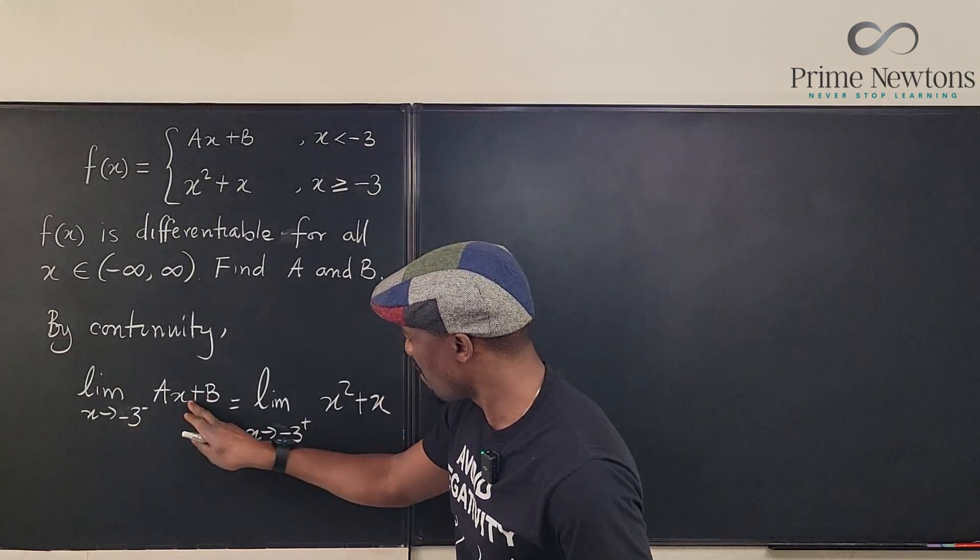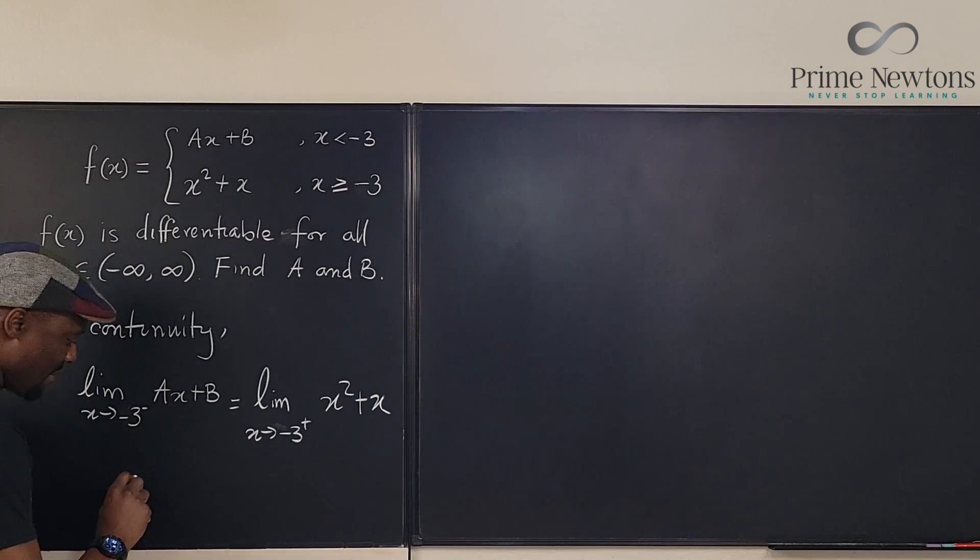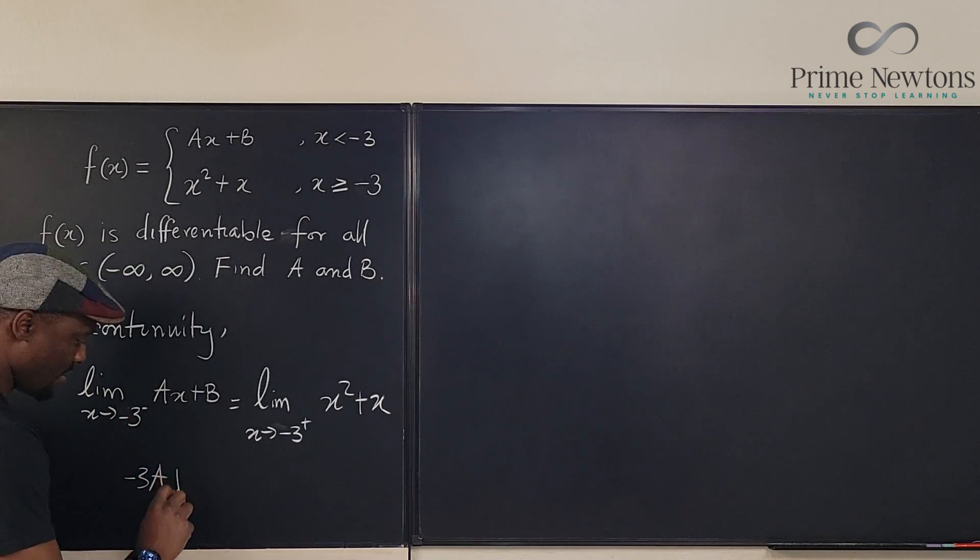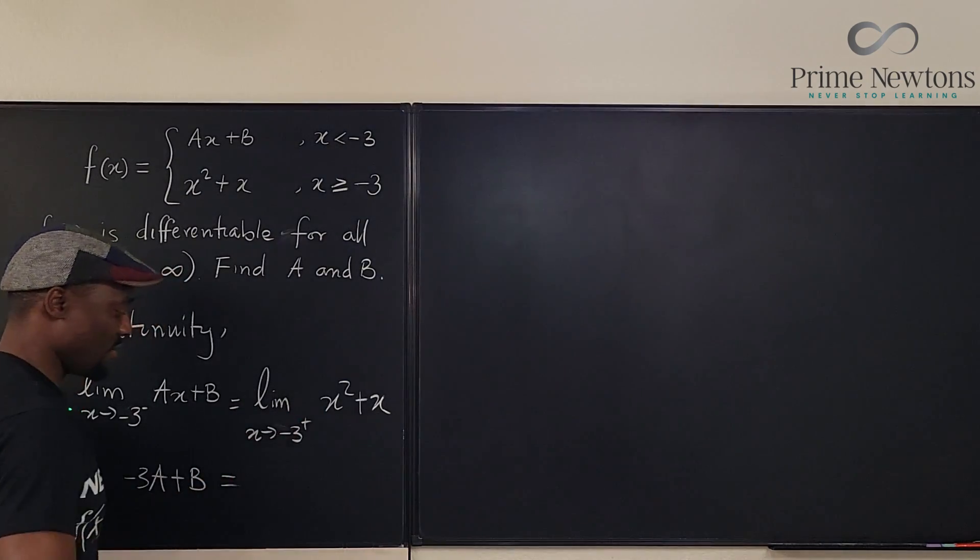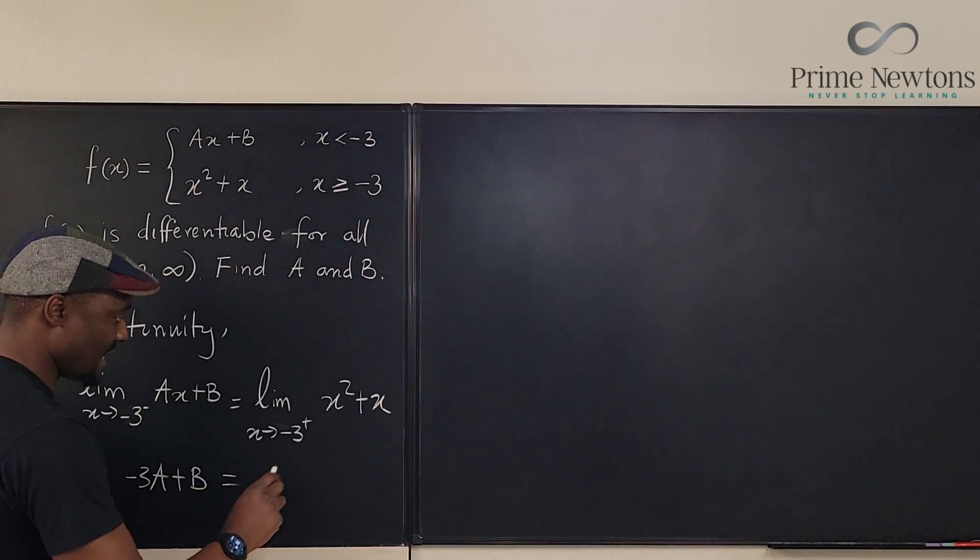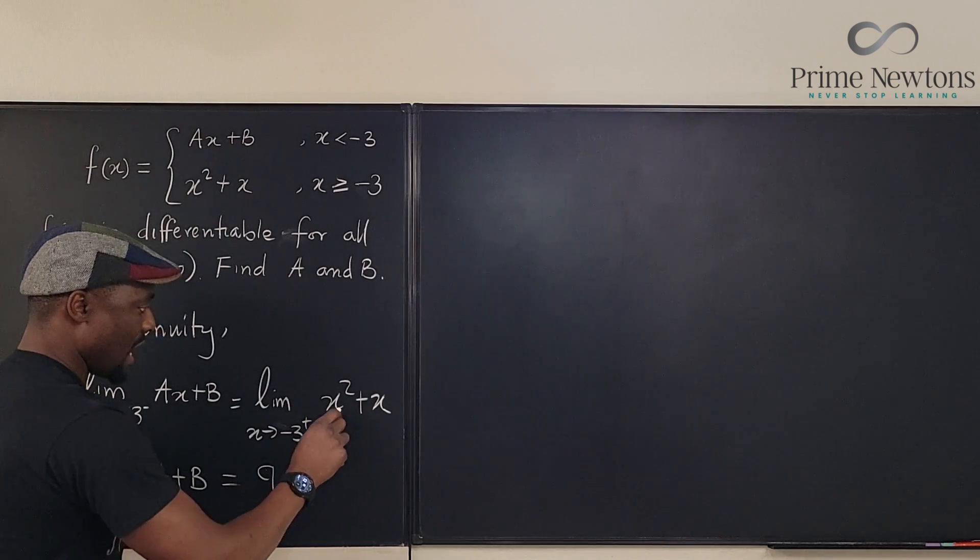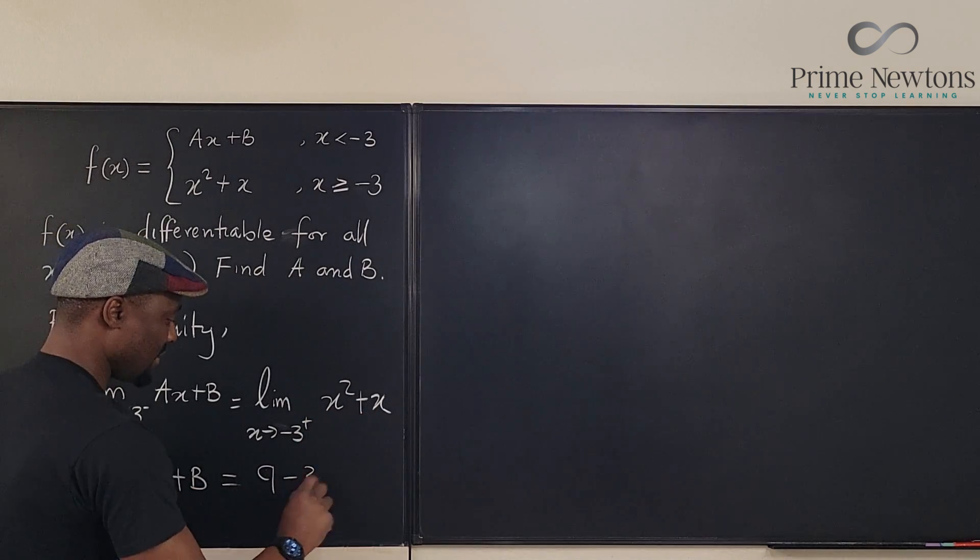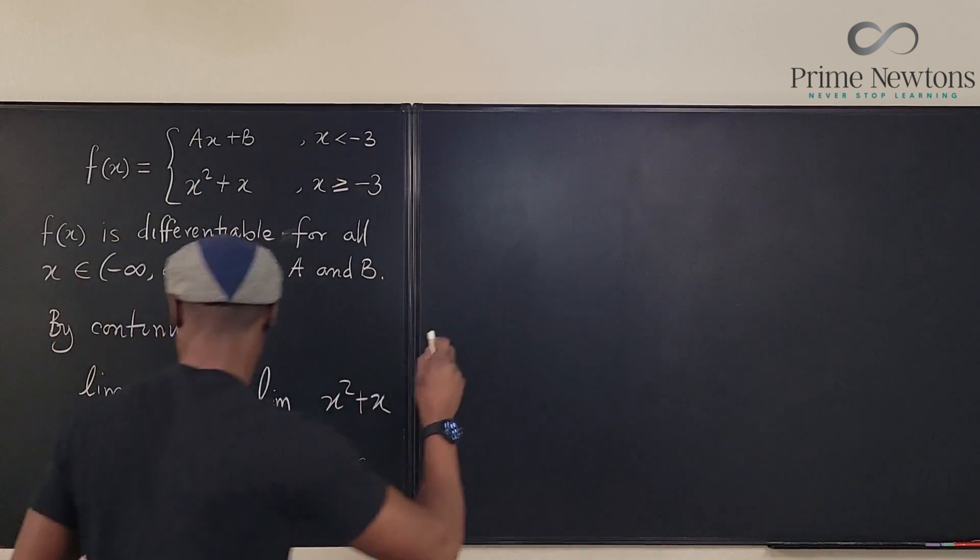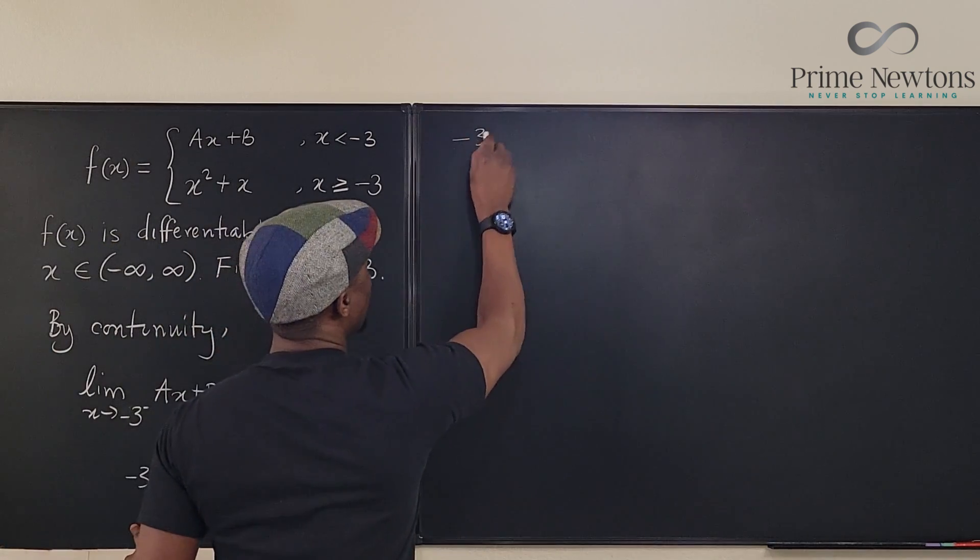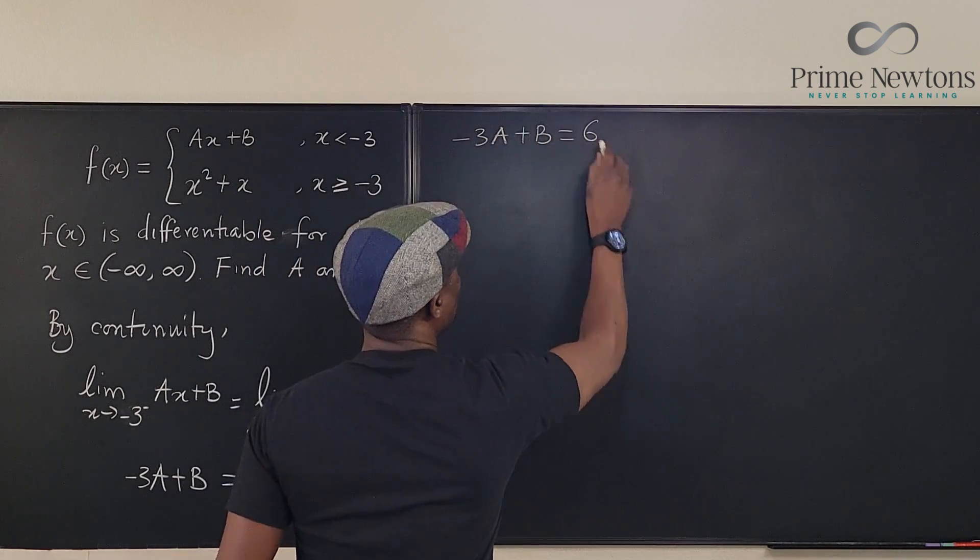So what is this? We're going to plug in minus 3. See, we're going to end up with, if you plug in minus 3 here, you're going to get minus 3a plus b. If we plug in minus 3 here, we're going to get minus 3 squared is going to be 9, and 9 minus 3 is going to be equal to 6. So we have an equation.